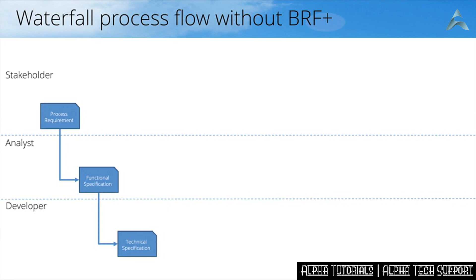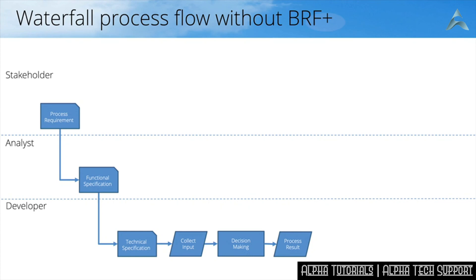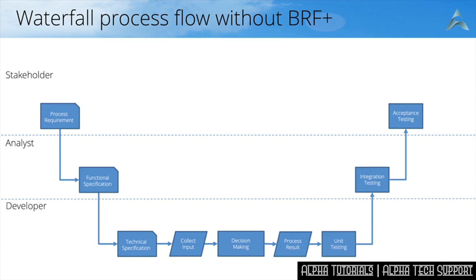I'm going to split development into three distinctive parts. The first step is to collect the input you need, then you do the decision-making part, and after you have the various decisions you can process the results — these are normally the three steps how you would build a program. Then the testing cycle starts: first the developer does unit testing, then the analyst looks at how the development fits inside end-to-end business processes during integration testing, and finally the stakeholder does acceptance testing, basically confirming that what has been built is fit for purpose. When everything is okay, approval is given and you start the process of deploying into a productive system.